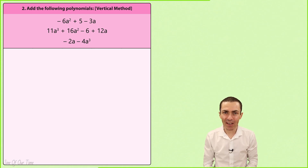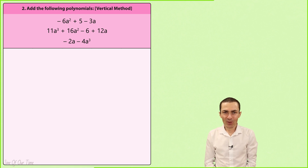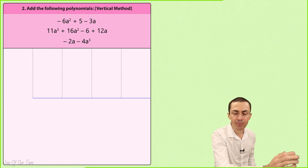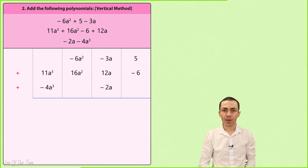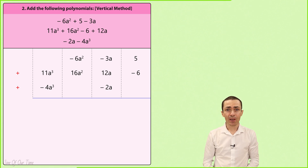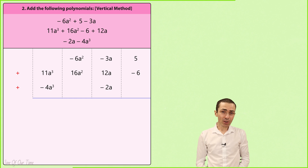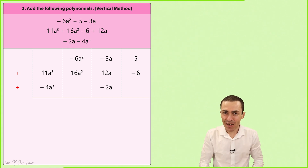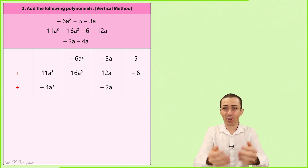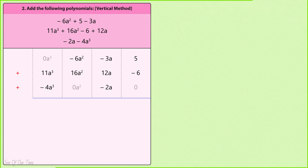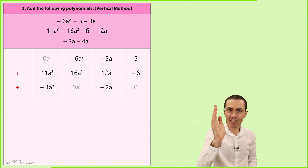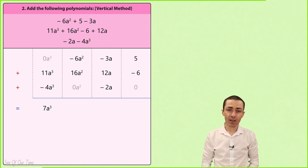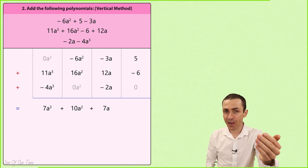Let's try adding these polynomials again by using the vertical method. We do this by creating virtual columns for each of the powers of a, starting from the highest power down to the lowest power. The first column contains all of the a cubed terms, the second column contains all of the a squared terms, the third column contains all of the a's, and the last column contains all of the constant terms. If you don't like to see gaps in any of the columns, please feel free to put in any placeholders. Remember, to get the sum we simply add the terms in each column, which turns out to be 7a cubed, 10a squared, 7a, and negative 1 for the fourth column.